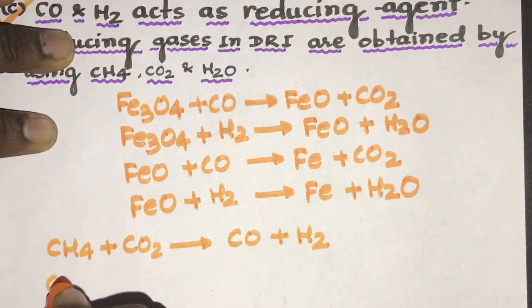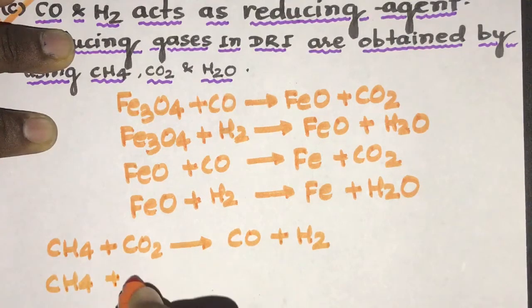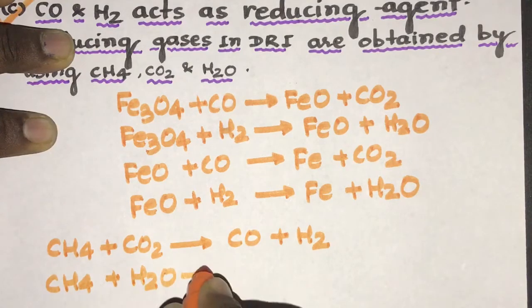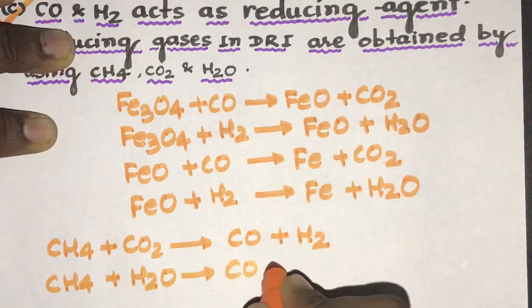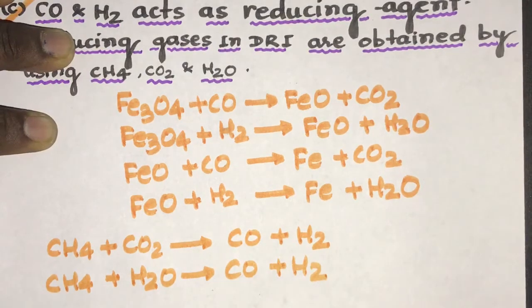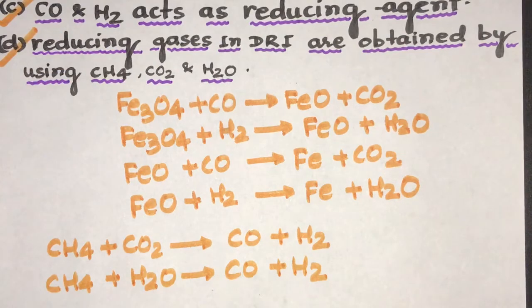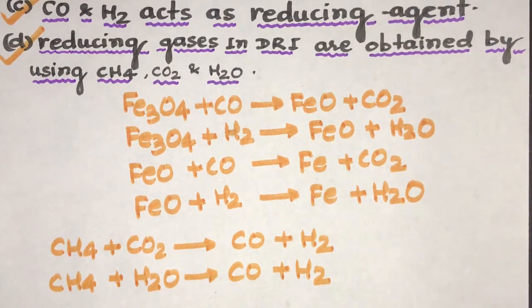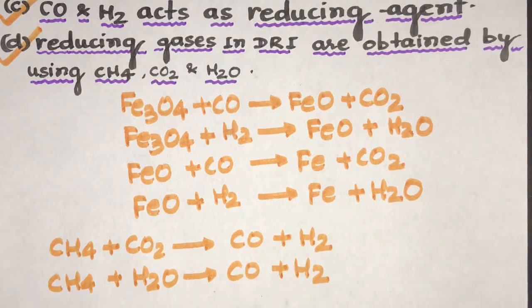Similarly, CH4 react with H2O gas, it forms CO and hydrogen gas. So we need a hydrocarbon that is methane in order to produce carbon monoxide and hydrogen gas as a reducing agent that acts as a reducing agent in DRI process.